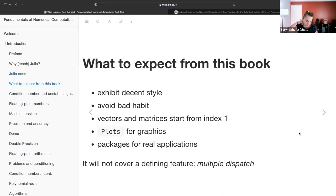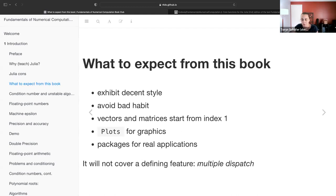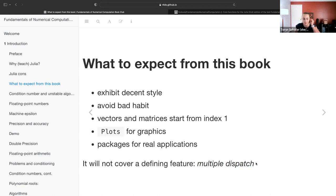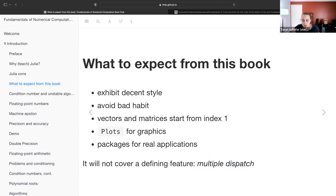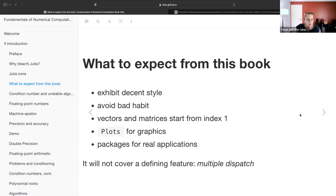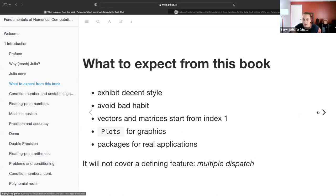What to expect from this book: their goal is to exhibit a decent style of programming in Julia so that we can avoid our bad programming habits. They make this mention that although there is some indexing from zero in Julia, they're only going to use everything from index one. There are lots of plotting packages, but they're only going to use this specific one, plots. They are going to get into packages for some real applications, but they will not cover a defining feature of Julia, which is multiple dispatch. This is one feature that makes Julia a star and they're not going to cover it.